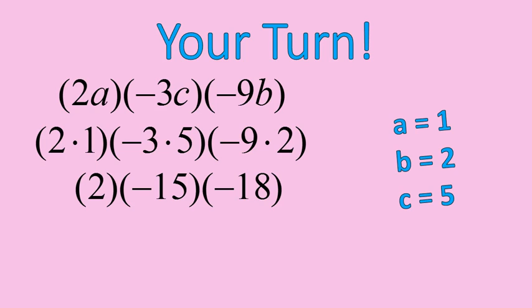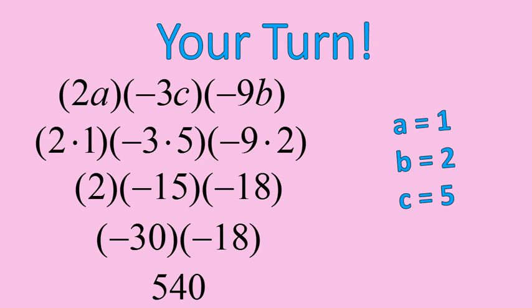Now I'm going to solve multiplication, starting at the left, moving to the right. 2 times 15 is 30. Positive times a negative gives me a negative. And then negative 30 times negative 18 should give me a positive. And the positive amount is 540.